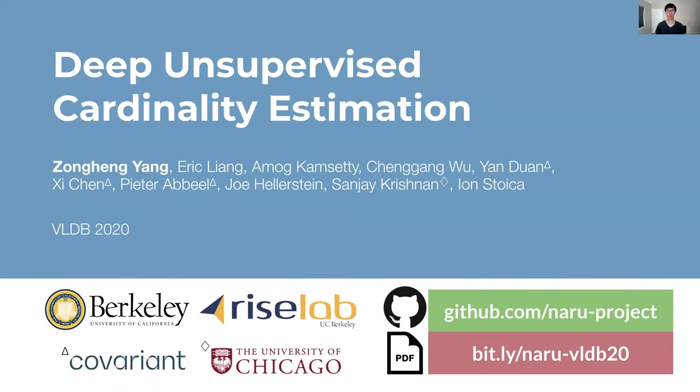Hey everyone, I'm John Hent from the Rice Lab at UC Berkeley. This work introduces a drastically improved cardinality estimator that completely removes heuristics using deep unsupervised learning. This is joint work with awesome collaborators from Berkeley, Covariant, and UChicago.